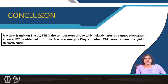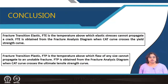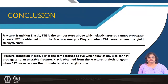From the fracture analysis diagram: NDT is where fracture strength equals yield strength equals ultimate tensile strength — no plastic deformation. CAT is the highest temperature at which unstable crack propagation can occur. FTE is where the fracture curve crosses the yield strength curve — above this, elastic stresses cannot propagate a crack. FTP is where the fracture curve crosses the ultimate tensile strength curve — above this, a flaw of any size cannot propagate to unstable fracture.